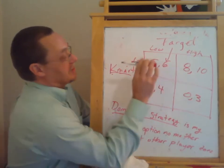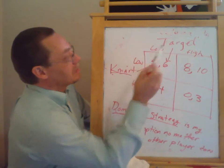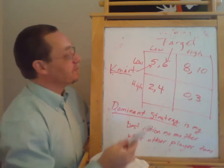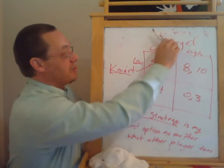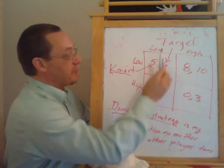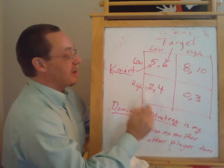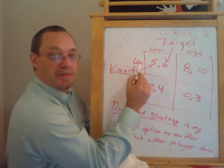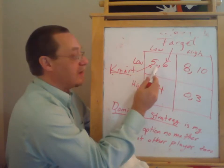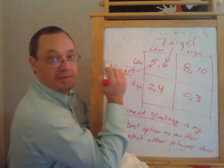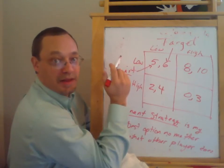So the way to look at this is if Target plays low, what should Kmart do? If Target plays low, we know that we're in this column right here. And if we're in this column, Kmart has a choice between playing high and getting two and playing low and getting five. So if we're in this column here, if Target plays low, Kmart should play low.